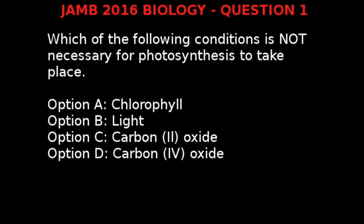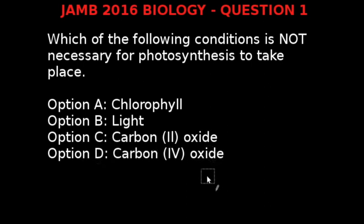JAM 2016 Biology Question 1. Which of the following conditions is not necessary for photosynthesis to take place? Option A: Chlorophyll. Option B: Light. Option C: Carbon monoxide (CO). Option D: Carbon dioxide (CO₂).